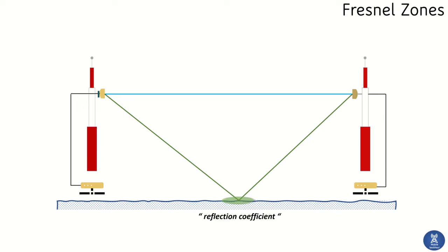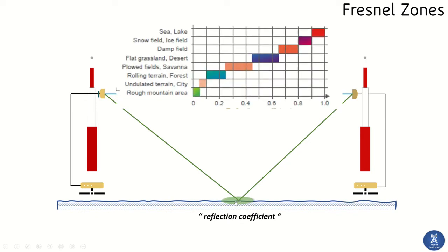You cannot exactly calculate the reflection coefficient in a microwave link. If two antennas are at the same height, the reflection point will be exactly in the middle of the path. The reflection coefficient also varies for different surfaces.